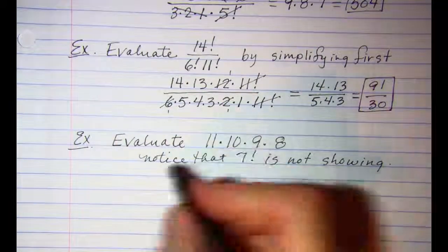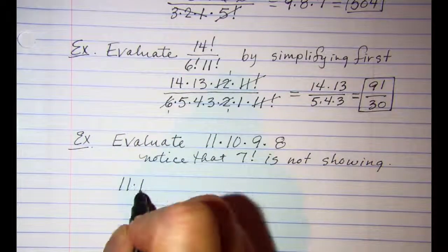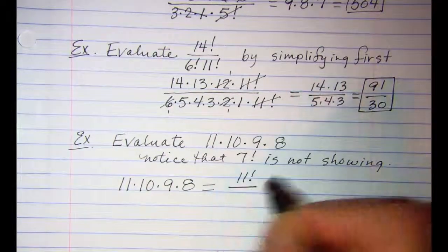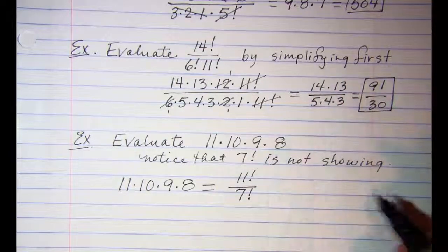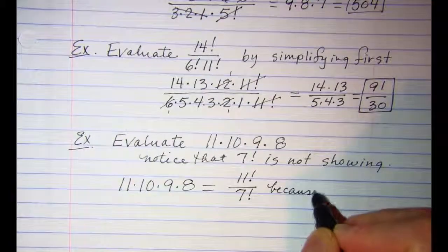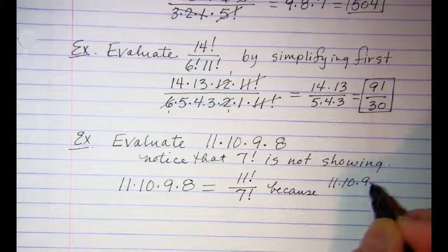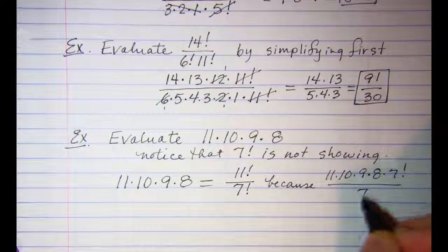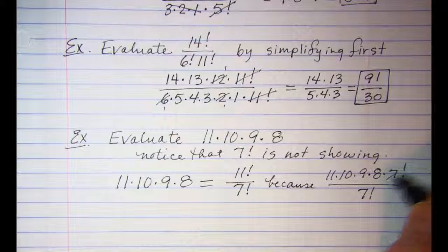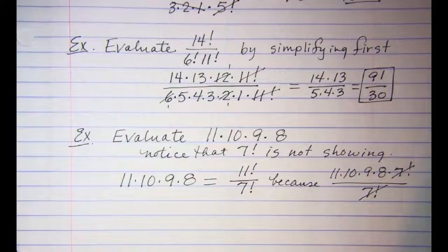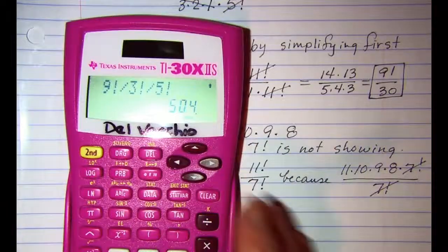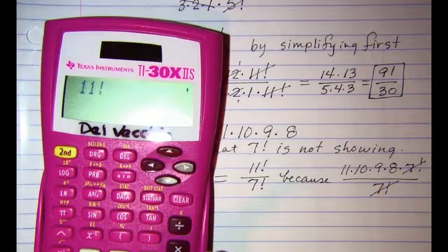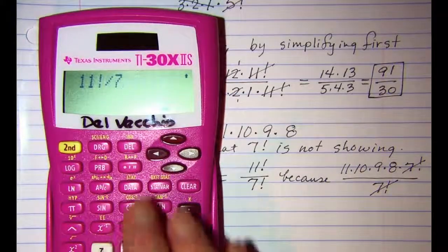So this expression can be written as 11! ÷ 7!, because we have 11 × 10 × 9 × 8 × 7! ÷ 7!. The 7! ÷ 7! is 1. So we can calculate this on our calculator: 11! ÷ 7! gives us 7,920.